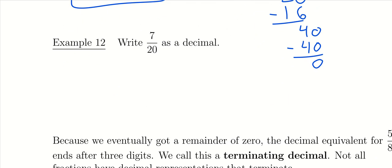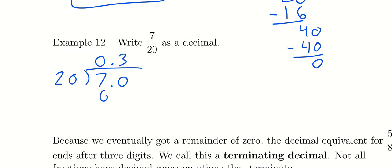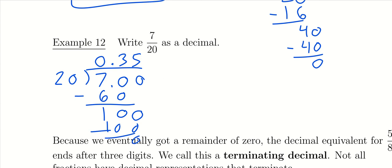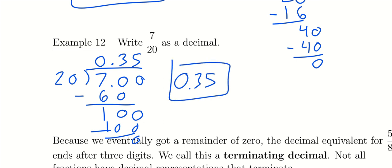For another example, let's take 7 over 20 and convert it to a decimal. We take 20 and divide it into 7. Twenty can't go into 7 because it's too big, so we add a zero. Twenty goes into 70 three times. Three times 20 is 60. We subtract to get 10, bring down a zero. Twenty goes into 100 five times. Five times 20 is 100, leaving zero remainder. So 7/20 equals 0.35, or 35 hundredths.